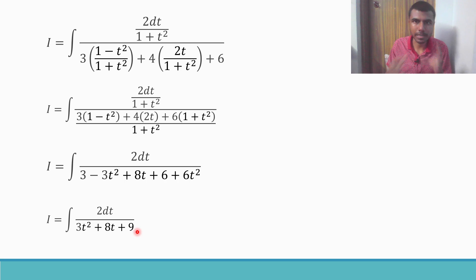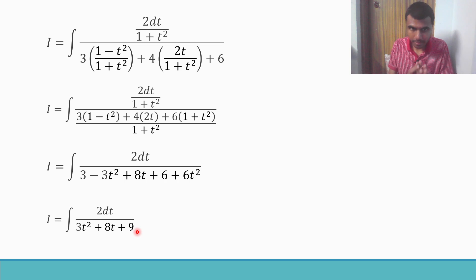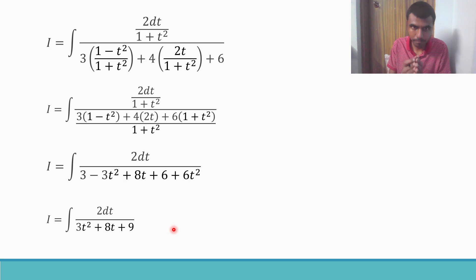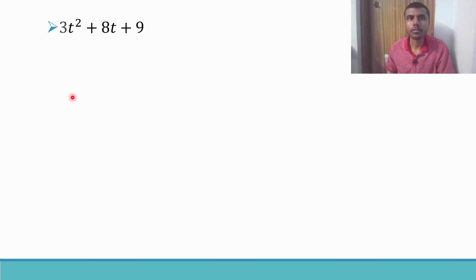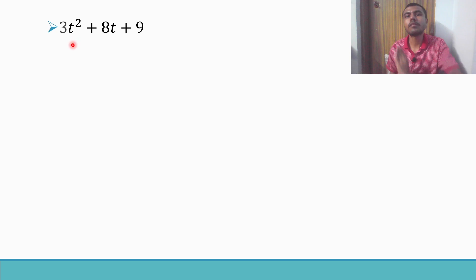To integrate this, I'm going to convert the denominator into the form of a perfect square plus something, so that I can use a standard formula. Take 3t² + 8t + 9 separately and work on it. First, make the coefficient of t² equal to one by taking 3 as a common factor.